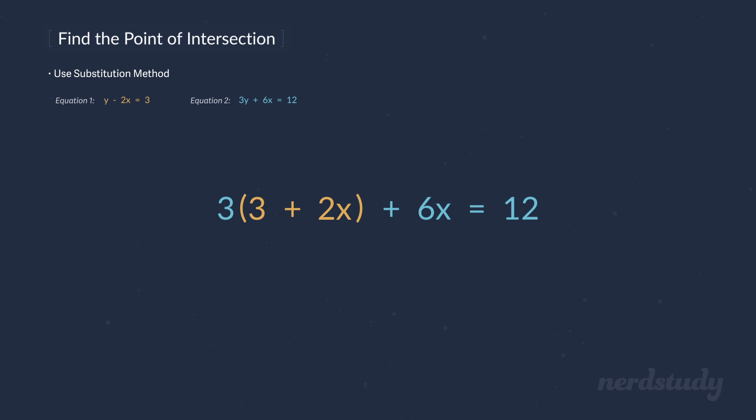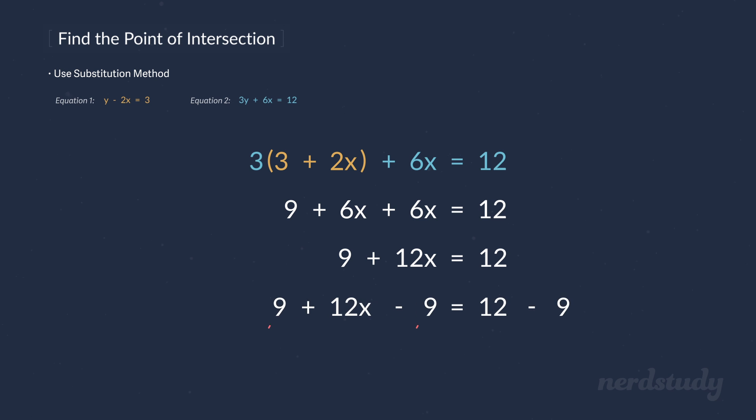What we get is 3 times open bracket 3 plus 2x closing bracket plus 6x equals 12. Now, let's simplify this. We distribute the multiplication of 3 to get 9 plus 6x plus 6x equals 12. Simplify some more and we get 9 plus 12x equals 12. Subtract both sides by 9 to get 12x equals 3. Now, we divide both sides by 12 to get x equals 3 over 12, which is the same as 1 over 4.